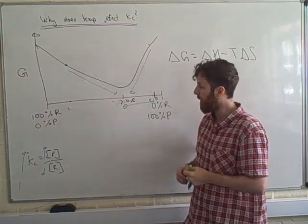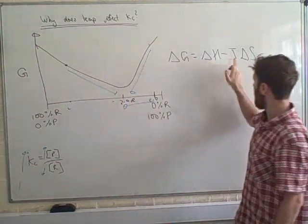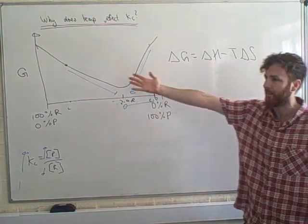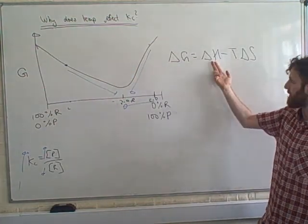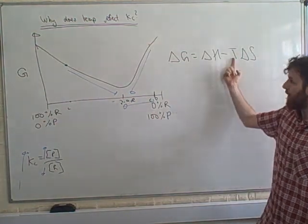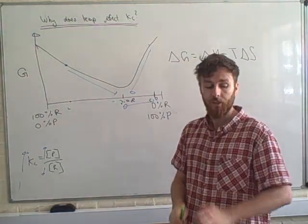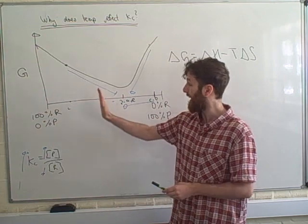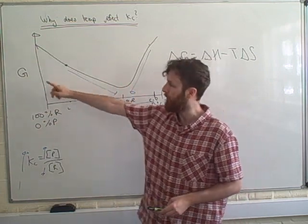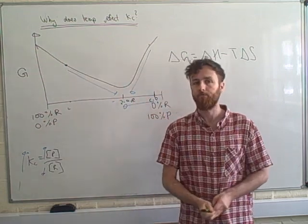You can see how temperature affects where the Gibbs minimum is, because temperature appears directly in the Gibbs equation: delta G = delta H − T delta S. Assuming delta H and delta S stay the same, changing T must change G, and therefore moves the position of minimum Gibbs energy. That's why temperature affects Kc — it actually moves the position of equilibrium by shifting where the minimum Gibbs energy is in your ratio of concentrations.